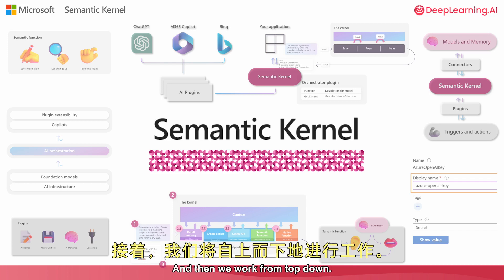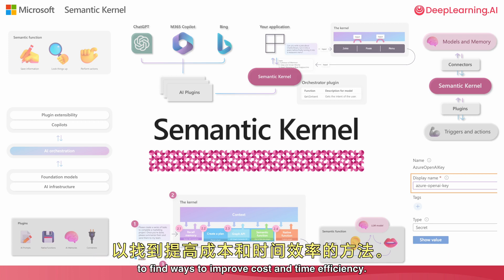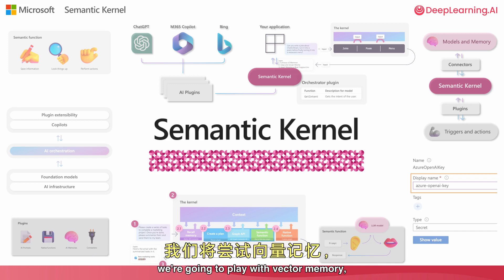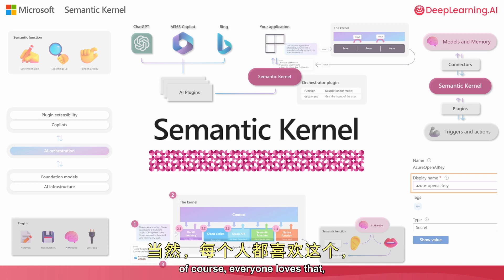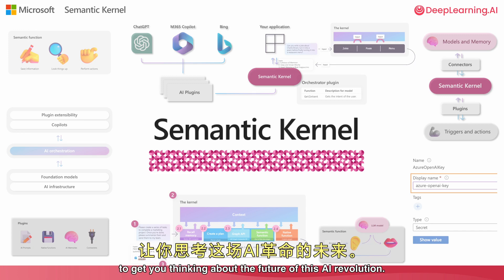Then we'll work from the top down, applying SWOT analysis to the Pizza Shop using the business thinking AI plugin to find ways to improve cost and time efficiency. Moving on, we're going to play with vector memory and use our planner module to finish the meal and get you thinking about the future of this AI revolution.